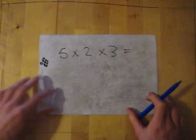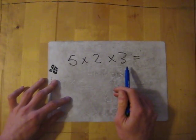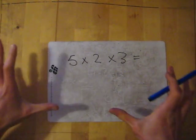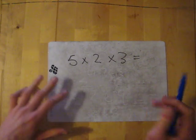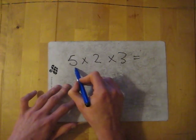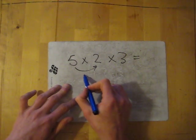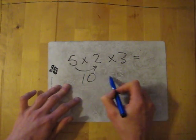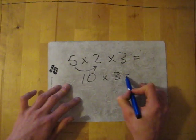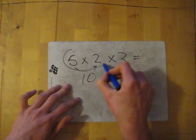So let's have a little go. I've got 5 times 2 times 3. It doesn't actually matter what order you do this in, but the easiest way I would suggest is doing the first number times the second number, which gives me 10. And now the equation is 10 times 3.